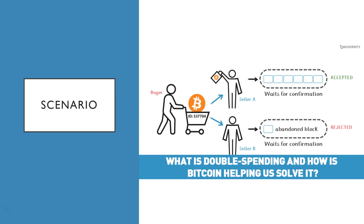Now let's take a look at a scenario where there's a buyer and two sellers for Bitcoin. Because of the validation and confirmation system the blockchain operates on, there can be no double spending. The buyer and Seller A have come to an agreement and the transaction has been accepted. The blocks are all lined up and awaiting confirmation from other people on the peer-to-peer network, so Seller B can no longer go ahead with the transaction. This is through a system of math called cryptography, which ensures that records can't be counterfeited.